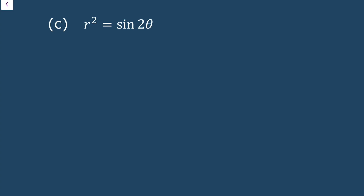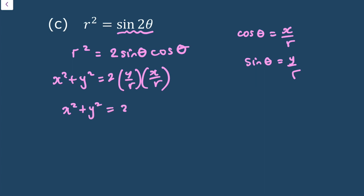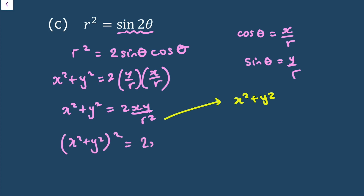For r squared equals sin 2 theta, using the double angle: sin 2 theta equals 2 sin theta cos theta equals 2(y/r)(x/r). So r squared equals 2xy/r squared. Multiplying throughout by r squared gives (x^2 + y^2)^2 equals 2xy. That is the Cartesian equation.